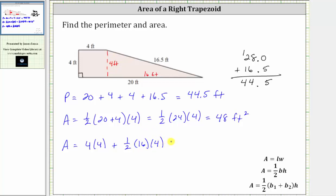Let's go ahead and simplify. Four times four is 16, plus one half times 16 is eight. Eight times four is 32. And notice how we get the same result of 48 square feet.